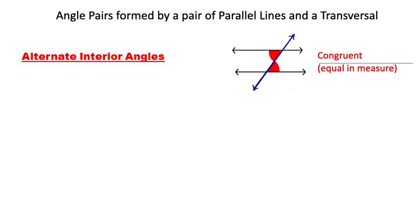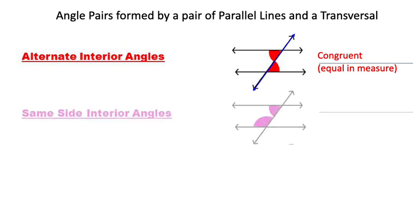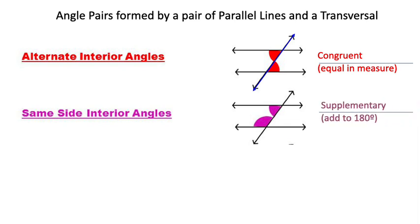Then we have same side interior angles. These are again in the interior of the parallel lines, and they are on the same side of the transversal — in this case both on the left side. Same side interior angles are supplementary; their measures will add to 180 degrees.